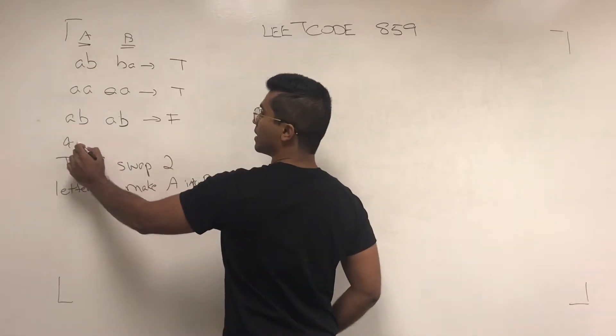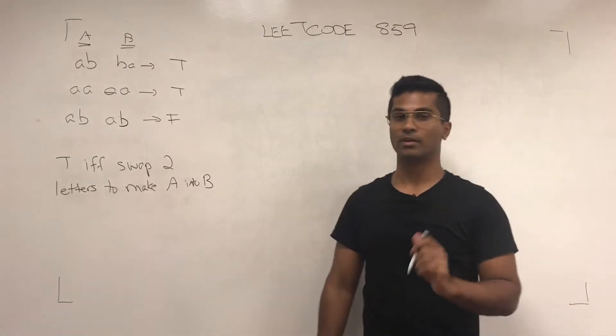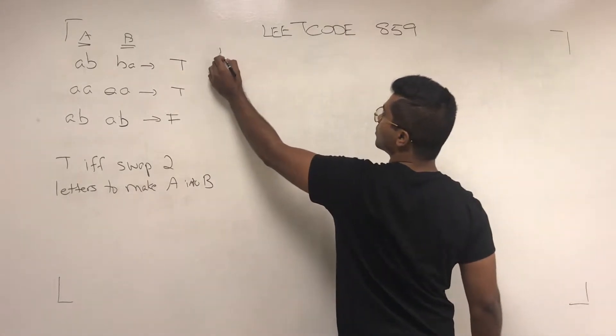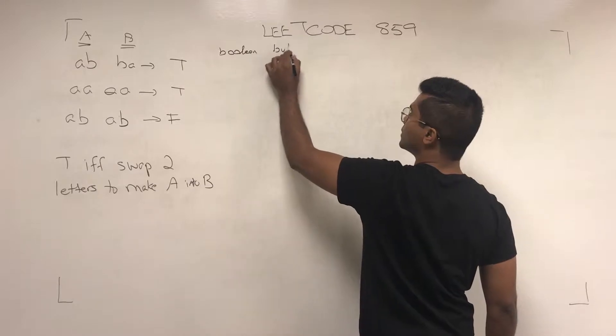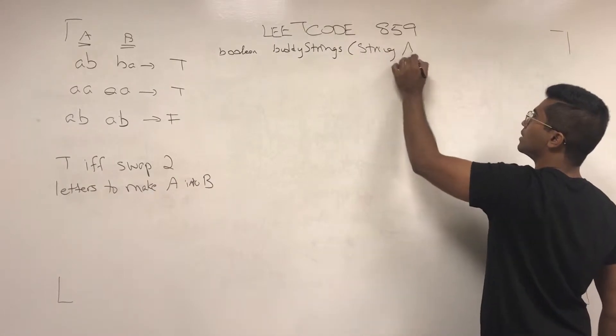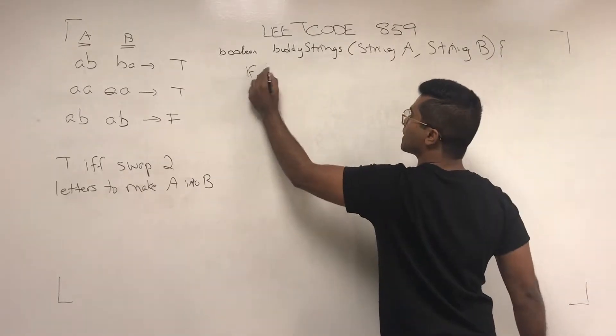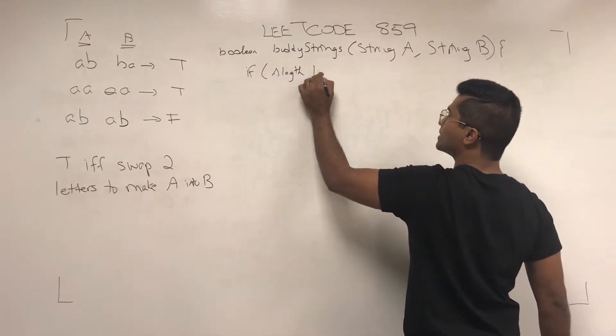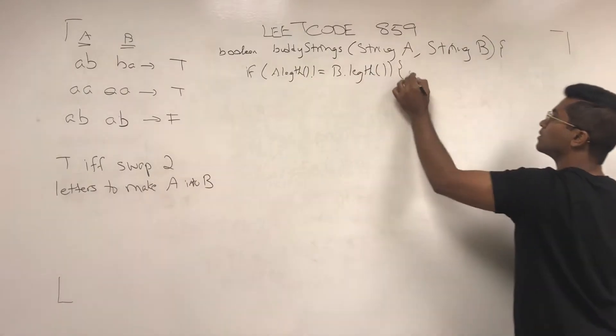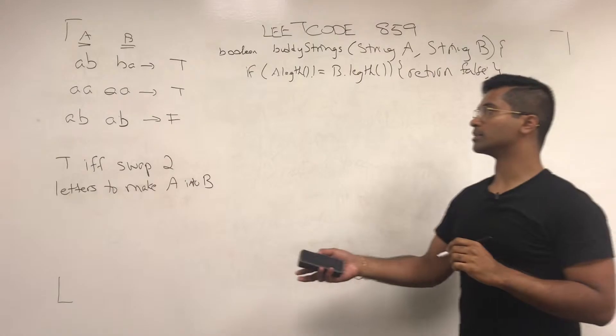So the first thing we have to do is check if they're the same length or not. If they're not the same length, you have to return false. Boolean buddyStrings string A, string B. If A.length is not equal to B.length, return false. Now if they're not the same, then we return false.